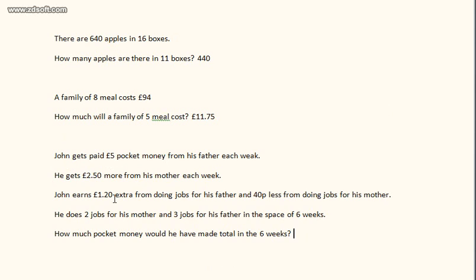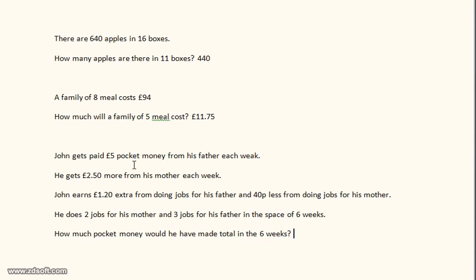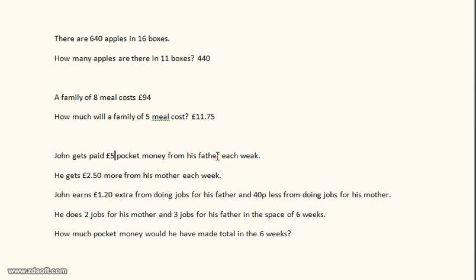It says: John gets paid £5 pocket money from his father each week. He gets £2.50 more from his mother each week. John earns £1.20 extra from doing jobs for his father, and 40p less from doing jobs for his mother. So the easiest bit: his father pays £5 a week and his mother pays £2.50 more, that's £7.50.